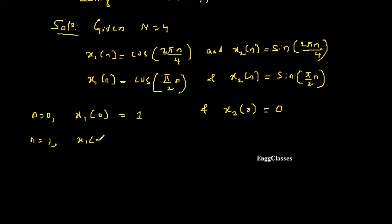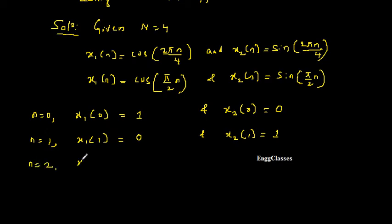For n = 1: x1(1) = cos(π/2) = 0. And x2(1) = sin(π/2) = 1. For n = 2: x1(2) = cos(π) = −1, which is a standard result. And x2(2) = sin(π) = 0.